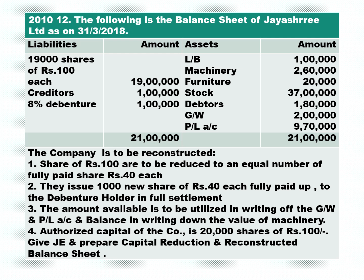We have 19,000 shares of rupees 100 each — 19 lakh. Creditors: 1 lakh. 8% debentures: 1 lakh. On the asset side: land and building 1 lakh, machinery 2 lakh 60,000, furniture 20,000, stock 37 lakh, debtors 1 lakh 80,000, goodwill 2 lakh, and P&L account 9,70,000.